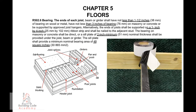R-502.6, Bearing. The ends of each joist, beam, or girder shall have not less than 1.5 inches (38 millimeters) of bearing on wood or metal, have not less than 3 inches (76 millimeters) of bearing on masonry or concrete, or be supported by approved joist hangers.